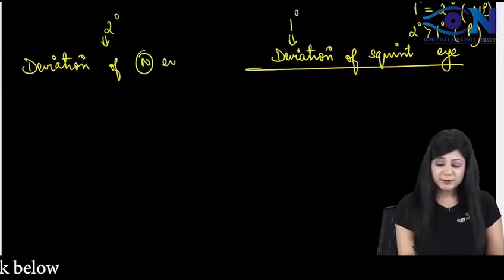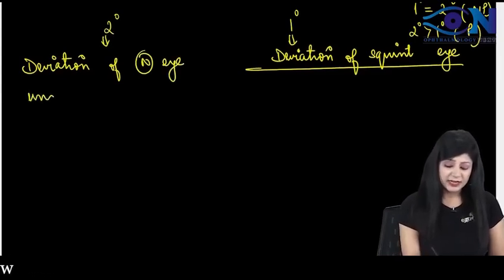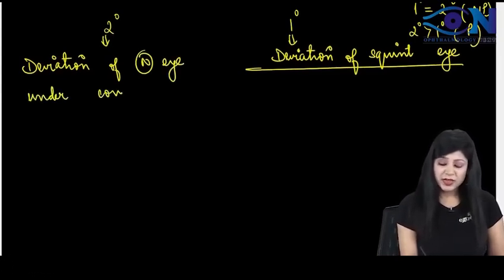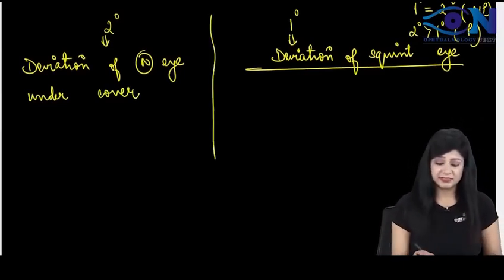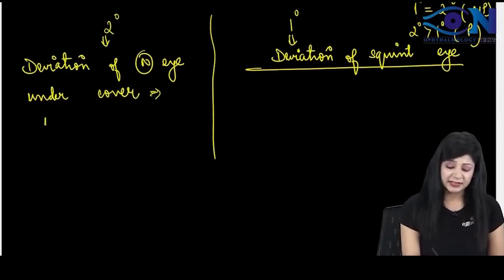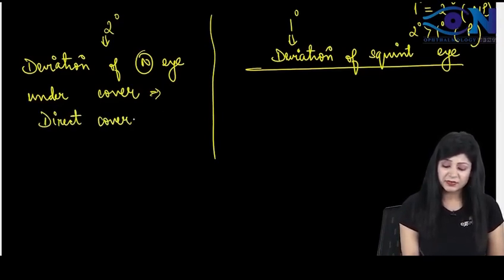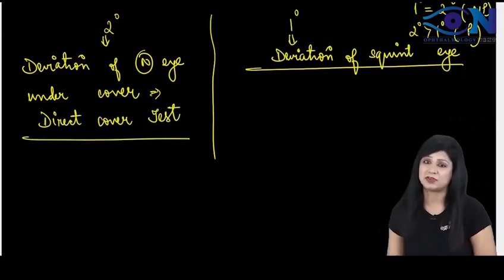Secondary deviation is the deviation obviously of the normal eye. Now you will say, why is the normal eye deviating? It is under the cover. So we are putting the normal eye under a test. We are covering it and this test is called as the direct cover test. Then we are seeing the deviation and that is called as the secondary deviation.